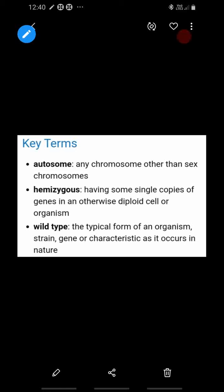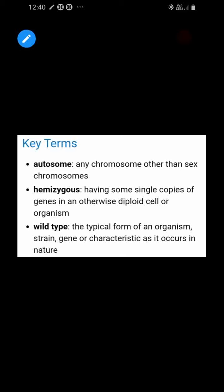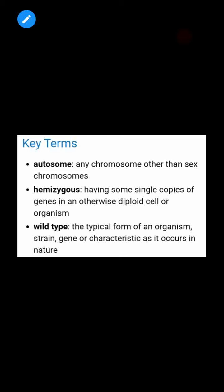For example, Mendel had experiments on pea plants. One trait was tall and one was dwarf. The dominant trait was tall, and since nature usually expresses the tall trait, we call it the wild type trait.